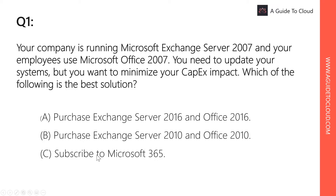Question one: Your company is running Microsoft Exchange Server 2007 and your employees use Office 2007. You need to upgrade your systems but want to minimize your CapEx impact. Which of the following is the best solution? By purchasing Exchange Server, you pay upfront — that's a CapEx investment, so we eliminate those options. The only option here is to subscribe to Microsoft 365, which is an operational expenditure model, not CapEx. The right answer is C.